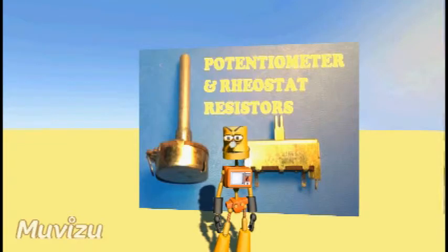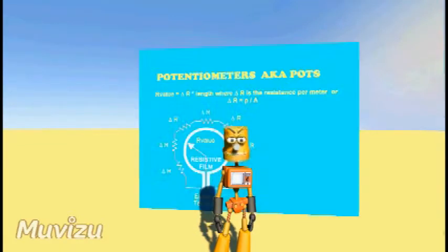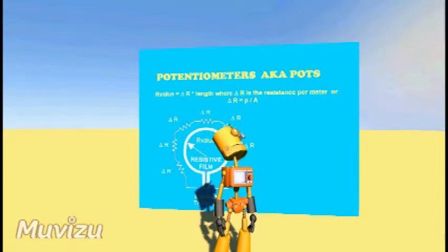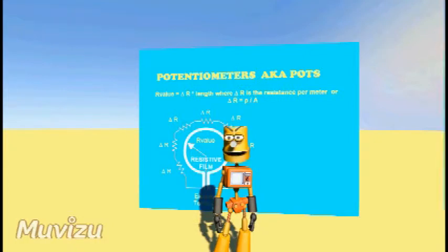Now remembering from earlier that the resistance is the physical quantity between the two electrical contact points where resistance equals rho times length over area. The resistance is proportional to length. If you move the wiper along the resistive element, the resistance between the two contacts is either increasing or decreasing as the mean length increases or decreases.